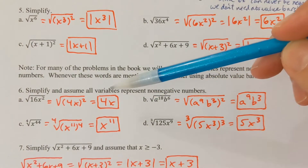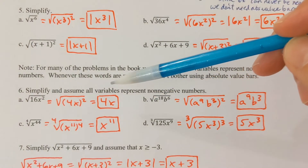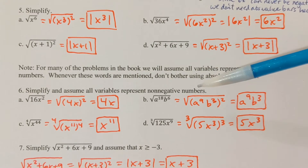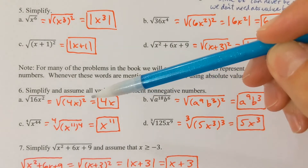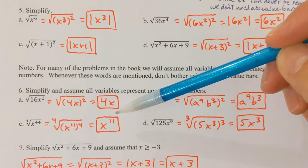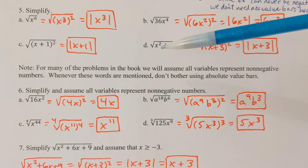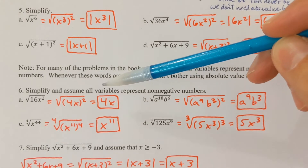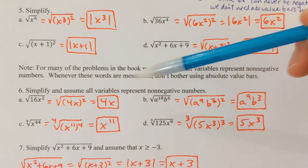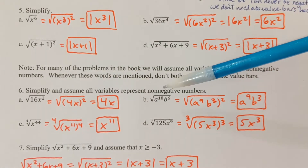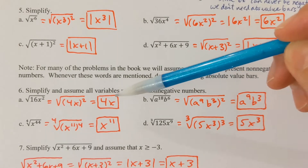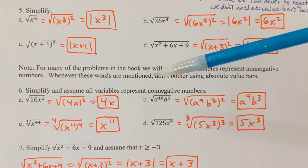If they did not say assume all variables represent non-negative numbers, I would need to have absolute value bars around the 4x. If I did not have the absolute value bars, it would be a wrong answer. But the fact that they're telling me the variable is not negative, I actually don't need those.